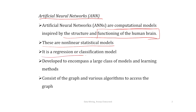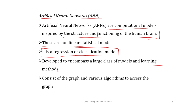ANN is a regression or classification model depending upon the objective for which you use it. If you use ANN for predictive modeling, then it is a regression model; you can also use it for classification. ANN is developed to encompass a large class of models and learning methods, providing a very general setup. It consists of a graph and various algorithms to assess the graph.